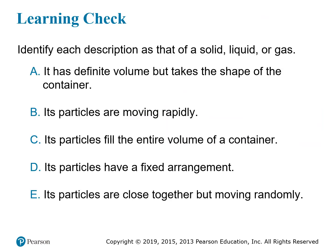From these definitions of the different states of matter, we can take descriptions of different substances and determine whether they apply to a solid, a liquid, or a gas. If something has a definite volume and takes the shape of its container, the definite volume means it's either a solid or a liquid. But since it takes the shape of its container, it can't be a solid — so it must be a liquid. For B, particles moving rapidly is most characteristic of a gas.